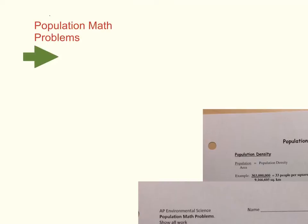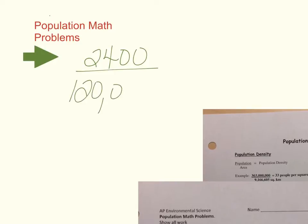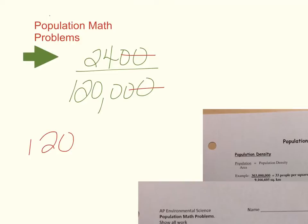We have 2,400 divided by 120,000. The easiest way to do this is to cancel zeros — two of them here and two of them here. Now we do a long division problem: 1,200 going into 24. Here's our decimal; let's bring it up to the top.